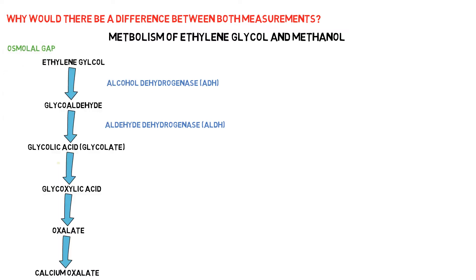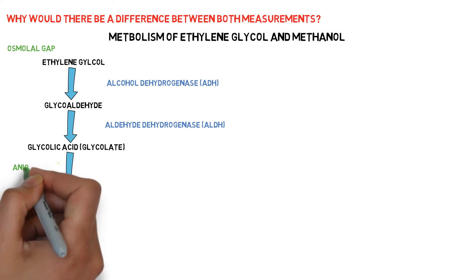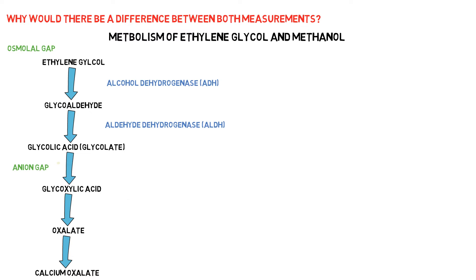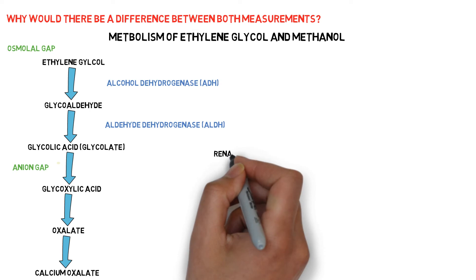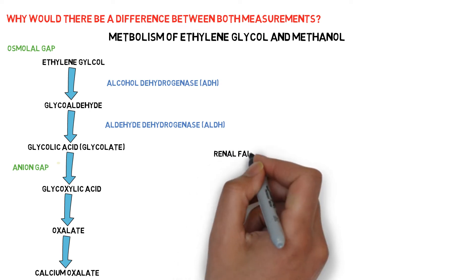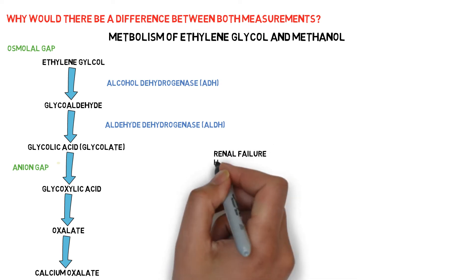It is worthwhile noting that while ethylene glycol is the substance responsible for creating the osmolal gap, it is glycolic acid and glyoxylic acid that cause the anion gap. Therefore, depending on how soon the patient presents, you may see a very high osmolal gap, a very high anion gap, or both, depending on how much ethylene glycol, glyoxylic acid, and glycolic acid is in the system.